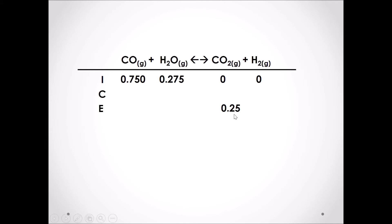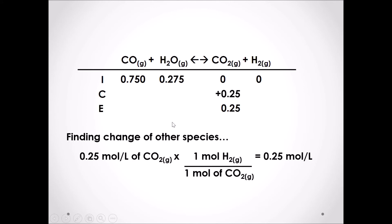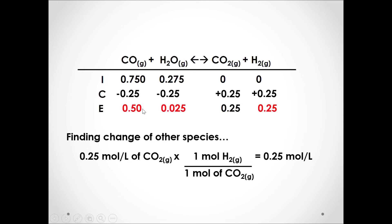We can now find the change of one chemical species. The change of CO2 gas was plus 0.25 moles per liter. We can then use stoichiometry to find the change of all other chemical species. All chemical species have a coefficient of 1 in front of them; therefore, the molar ratio in this chemical equation is all 1 to 1. The change in concentration of the products is plus 0.25 moles per liter; therefore, the change in concentration of the reactants is minus 0.25 moles per liter. Now we can find the equilibrium concentrations of each chemical species by taking our initial concentrations and minusing or adding the change in concentration.